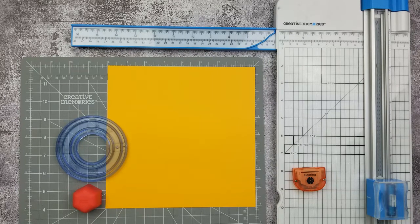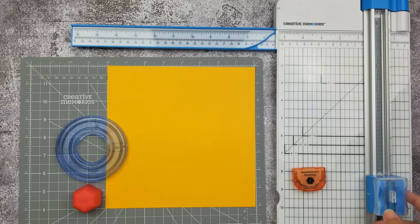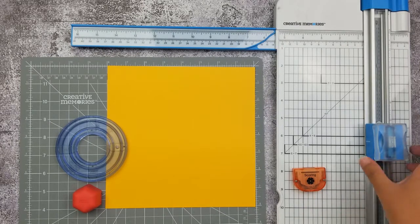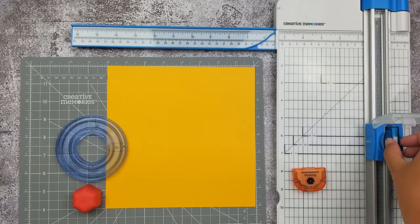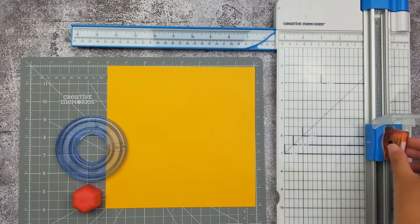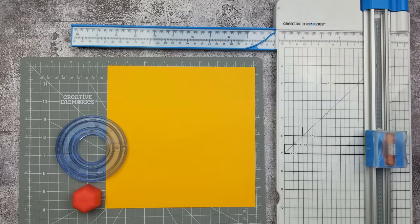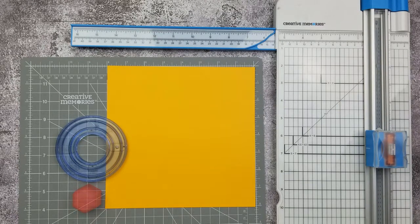So let's get started. First thing I'm going to do is put my scoring blade inside of my 12 inch trimmer. If you guys would like more tips on how to use your trimmer, make sure you check out my trimmer playlist that I have here on the channel.